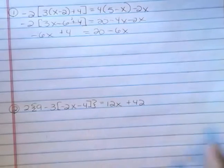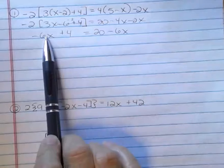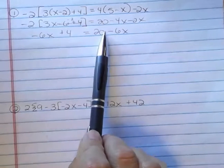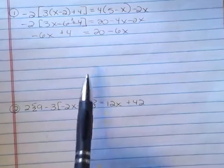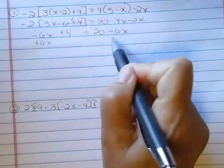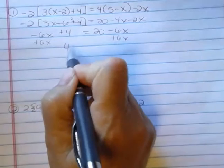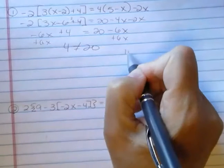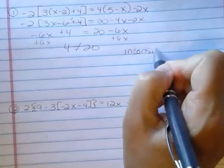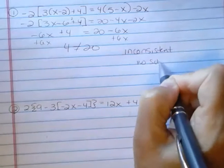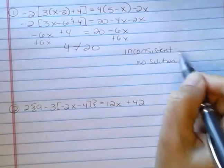Then I have 20 minus 4x minus 2x is minus 6x. Well, I know what's going to happen here already, because I have negative 6x on both sides, and I have two different numbers. I can tell this is going to be no solution or inconsistent equation. If I add 6x to both sides, I get 4 equals 20. That's not true. Already I know I have inconsistent solution. Or, sometimes we say no solution, because it's an inconsistent equation.